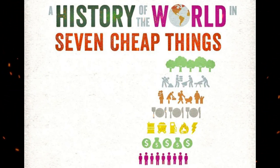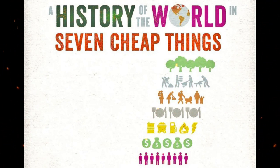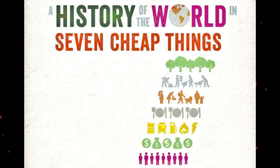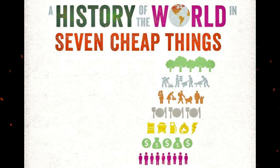Instead, the soil was being exhausted by sugar plantations, a system that was rapidly exported to the New World. This is cheap nature. Patel and Moore argue that the same willingness to exploit and exhaust natural resources continues to characterize capitalist expansion to this day.